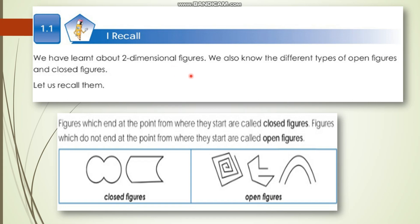Do you know about open figures and closed figures? Figures which end at the point from where they start are called closed figures. That means if the starting point and the ending point of a figure are the same, then we can say it is a closed figure. The figures which do not end at the point from where they start are called open figures. If the starting point and ending point are different, then those are open figures.